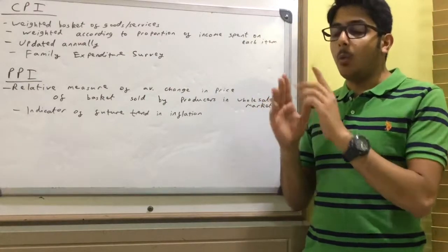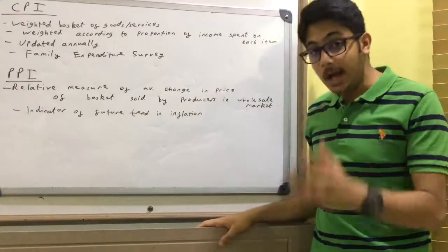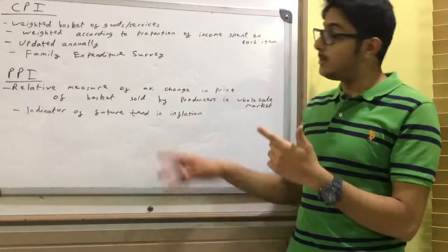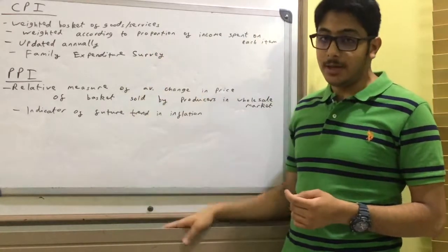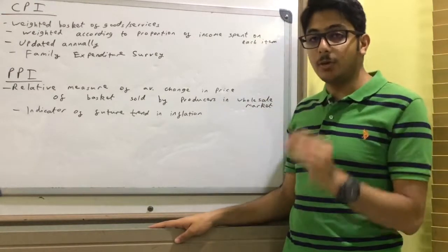It's weighted based on the proportion of income spent on each item. It's carried out through a Family Expenditure Survey which is updated annually and basically measures how much consumers, how much households, spend on goods and services.